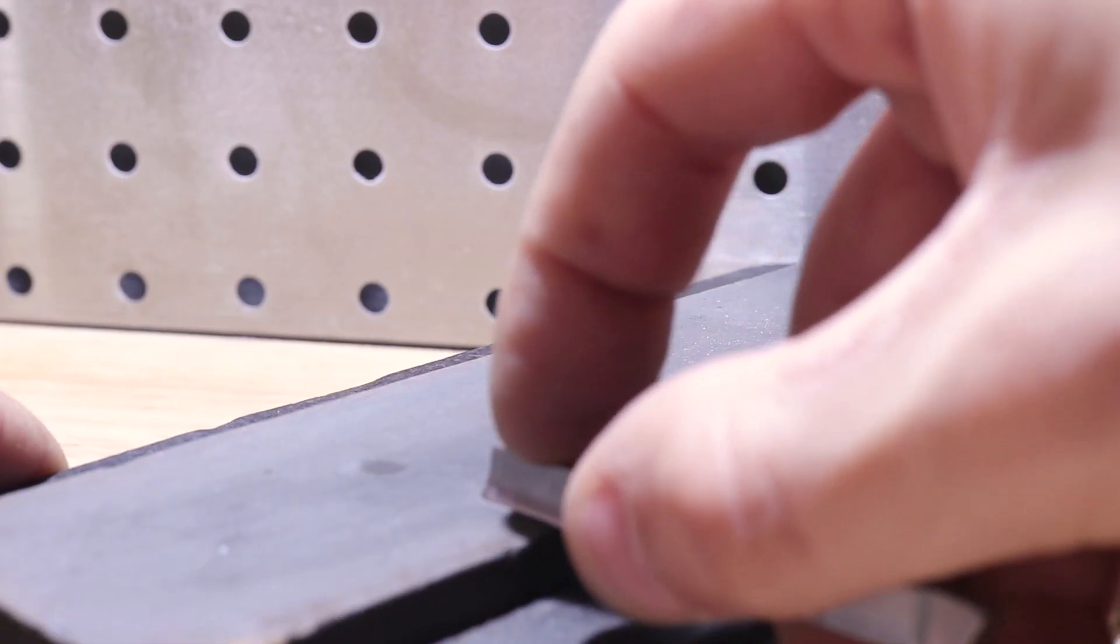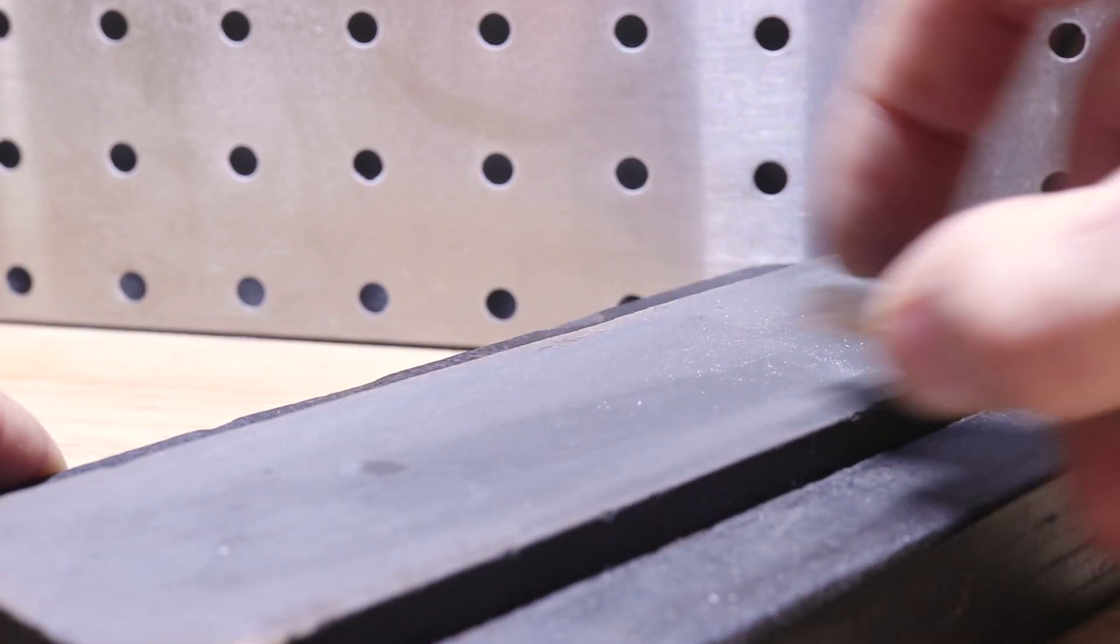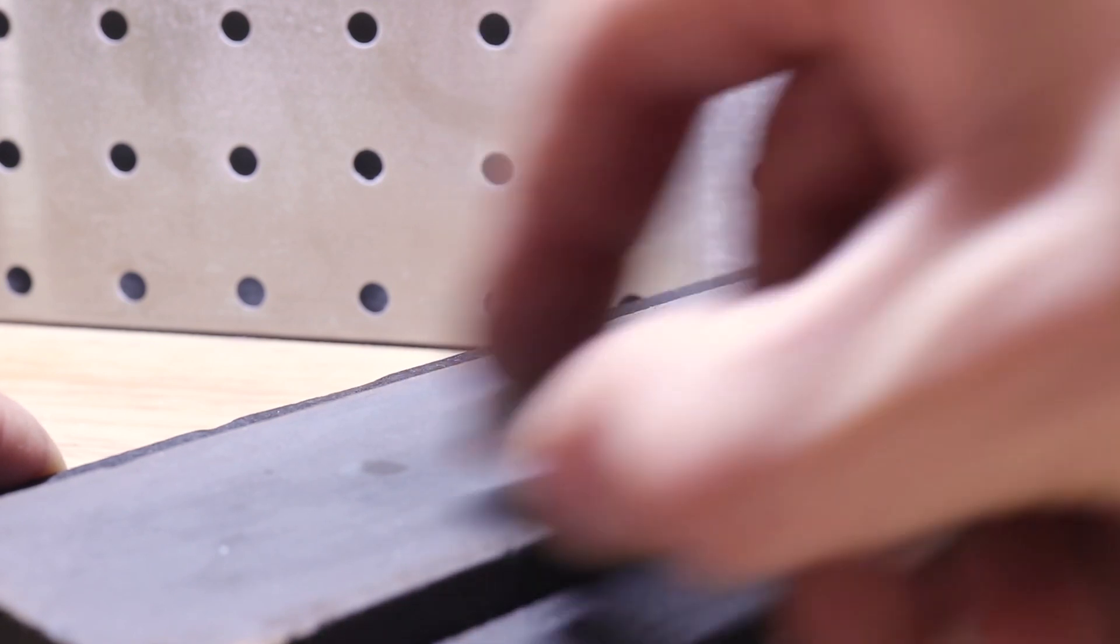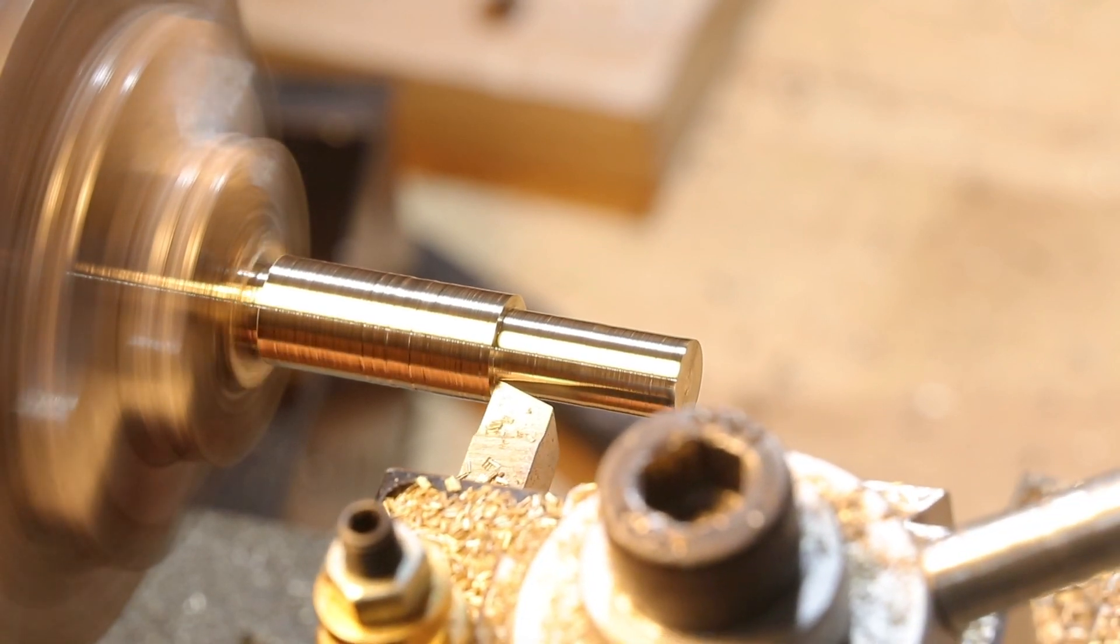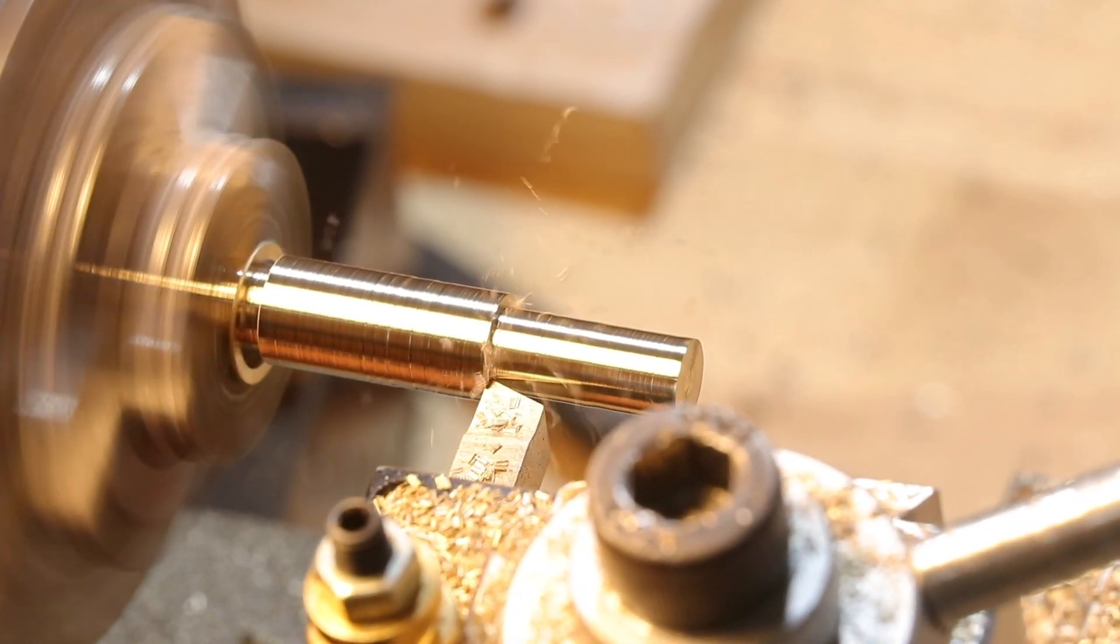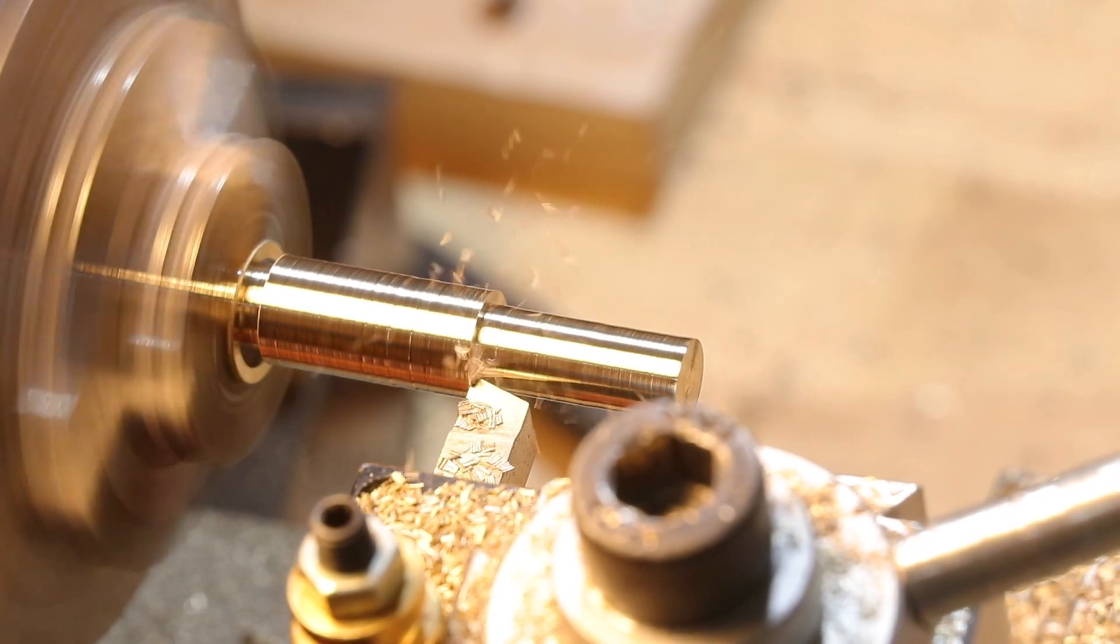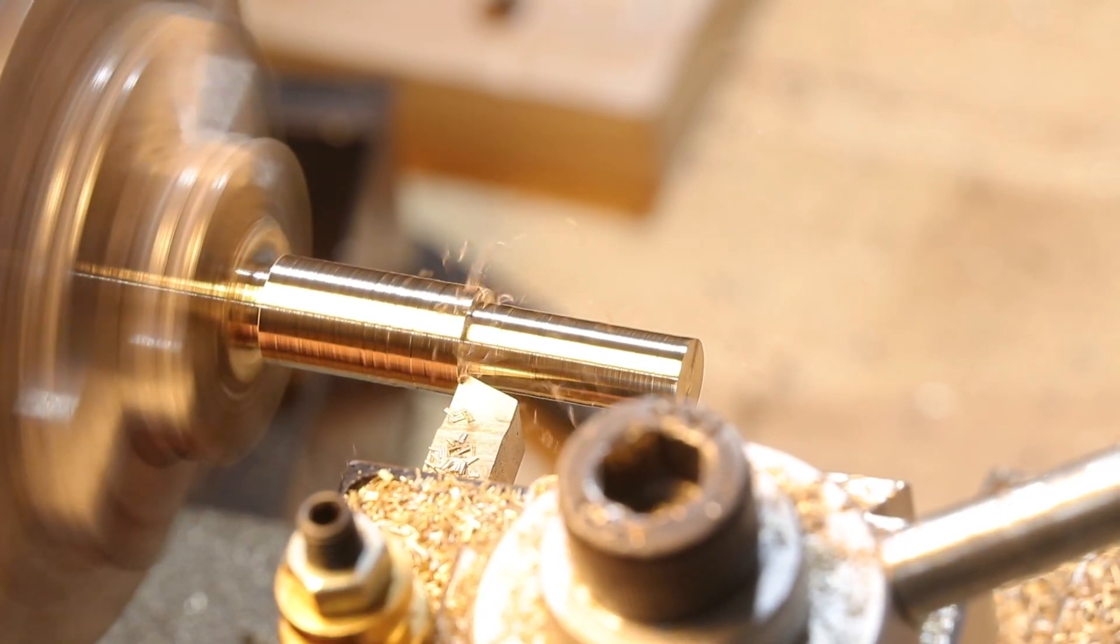High-speed steel is also really easy to resharpen, and the geometry, if you're grinding it yourself, can be easily customized to suit your type of cut. However, the biggest disadvantage of high-speed steel, especially for hobbyists, is the need to grind it yourself.